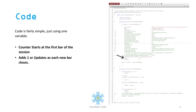We're just using one variable called the count, and the counter starts at the first bar of the session. Every instrument will have a different trading session — for example, an index futures contract starts trading around 3 p.m. Pacific (6 p.m. New York time), while a stock might start trading at 4 a.m. New York time. Depending on the session start time, the counter starts at that point and adds one to the count every time a new bar is formed.